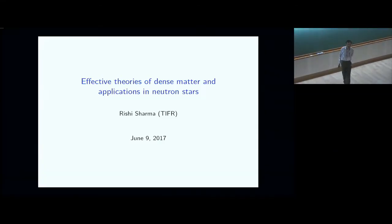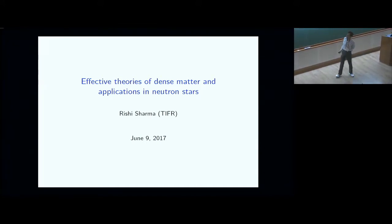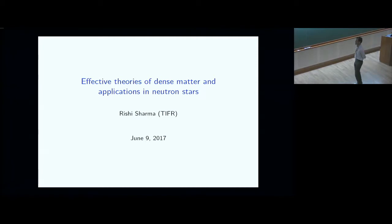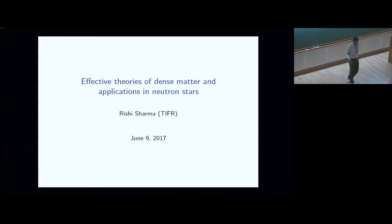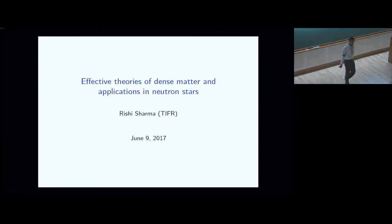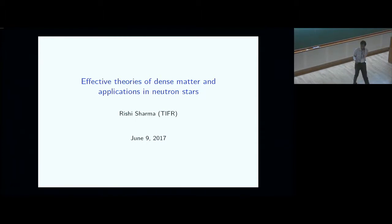First of all, thanks to the organizers for inviting me. I'll talk about something slightly different from a lot of the topics discussed here so far. I'll talk about matter in neutron stars. There is a connection with dark candles in the sense that neutron stars are objects you can't really see visibly, but by looking at them in radio and other wavelengths, you can get some information about matter in situations where we don't know much about how it behaves. And that would be the goal of this.